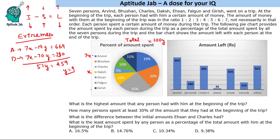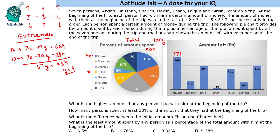Solving gives y equals 9, which is a whole number — a valid answer. So the total amount spent is 900. From this, Arvind spent 19 times 9 equals 171, giving Arvind an initial income of 669 plus 171 equals 840, which would be 7x, so x equals 120.